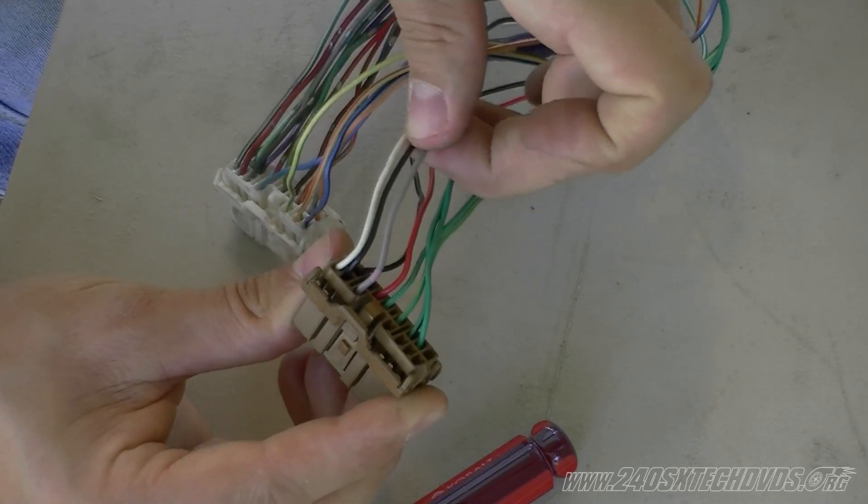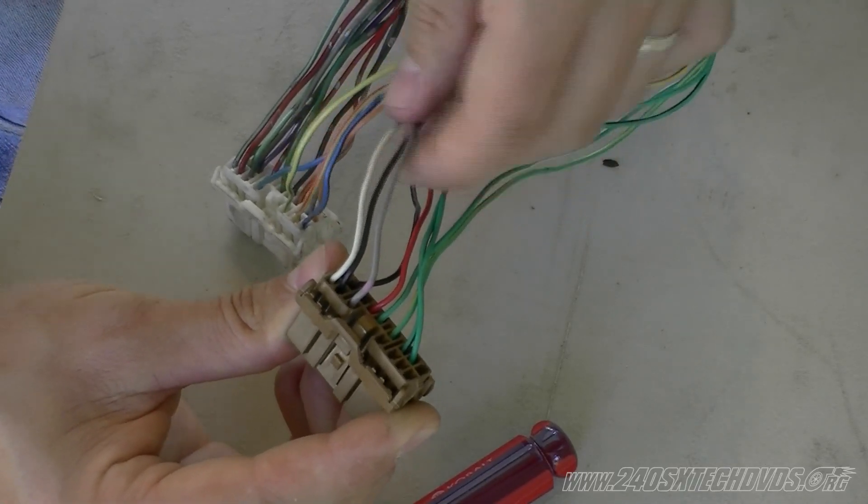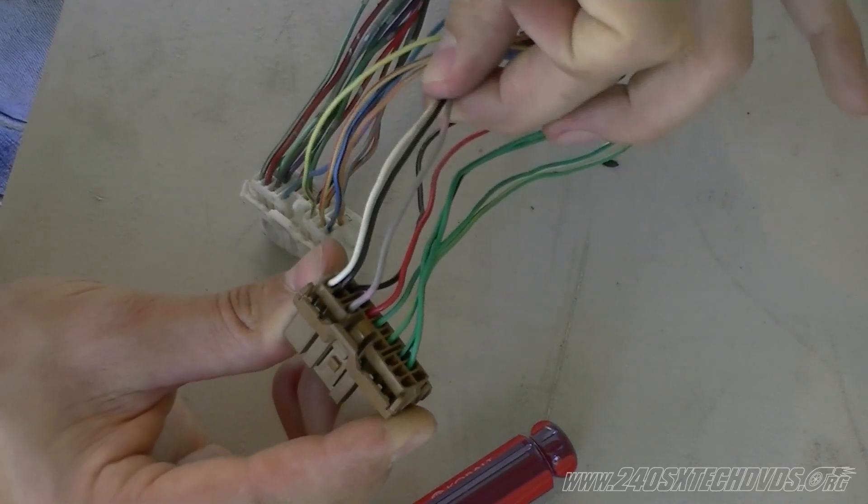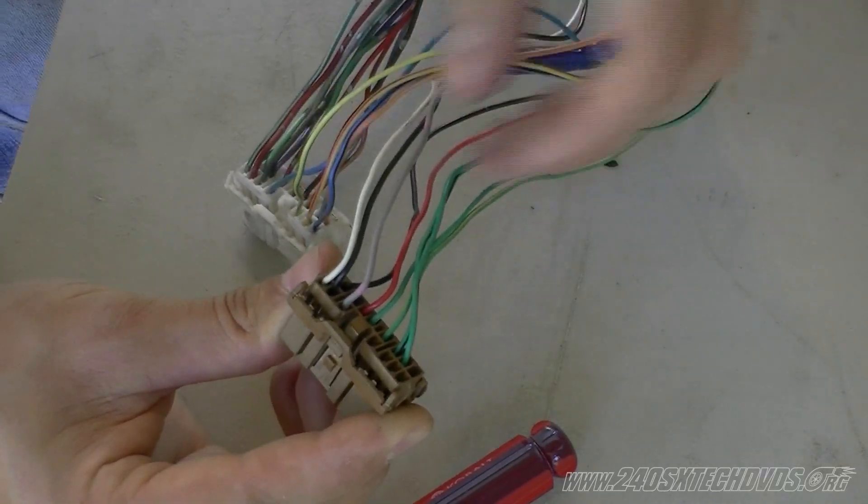Basically what we're going to do is cut them off at different lengths and tape them up. You could actually go through the entire harness and pull the whole wiring out for the ABS if you like. It is a little more work involved, but you can do it to clean it up.